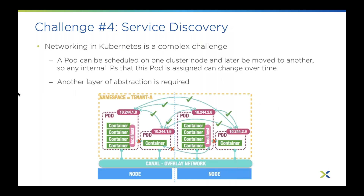Challenge number four of seven is service discovery. Networking is again one of the top challenges in Kubernetes. You can approach this several different ways. Kubernetes will assign pods their own IP addresses as well as a single DNS name for a set of pods, and it can load balance across those. But because a pod can be scheduled on one cluster node and then move to another, any internal IPs that the pod is assigned can change over time. Making pods reachable to external networks without relying on internal IPs — that's the big challenge, and it requires another layer of abstraction.